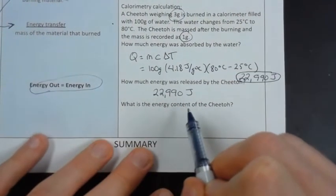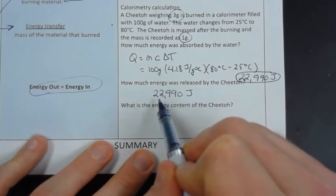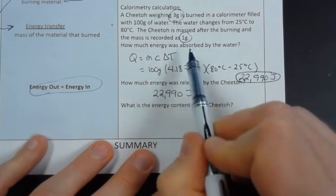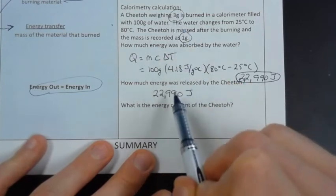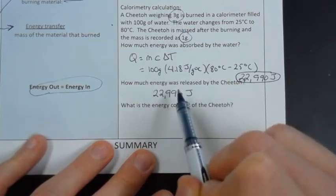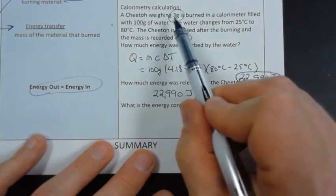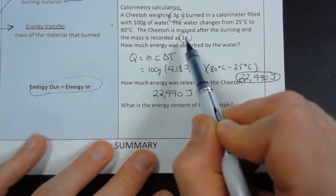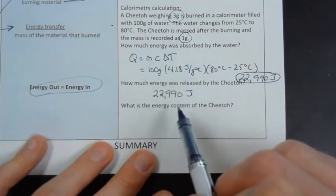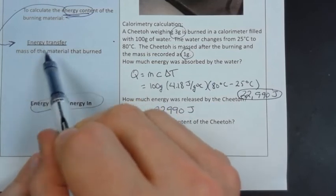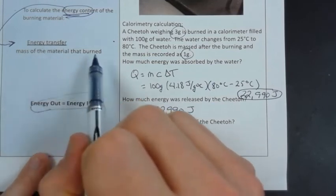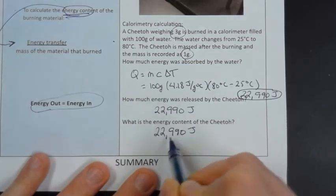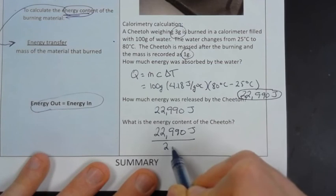If I want to figure out the energy content of the Cheeto, I need to use the energy that was released by the Cheeto, but I need to only equate how much Cheeto burned to contribute to this total amount of energy. So I started with three grams of Cheeto, but it obviously didn't burn away entirely because one gram was left over. So my energy content - the energy transfer divided by the mass of the material that burned - is going to be 22,990 joules divided by two grams.